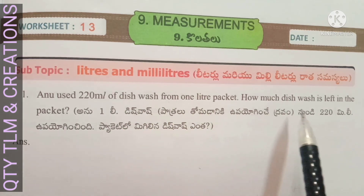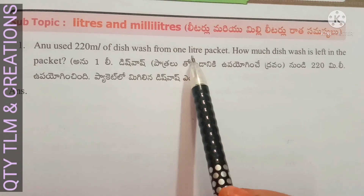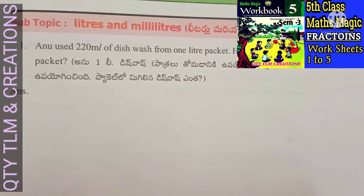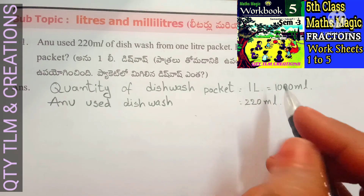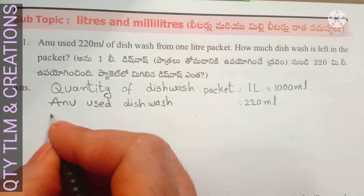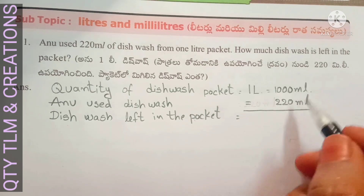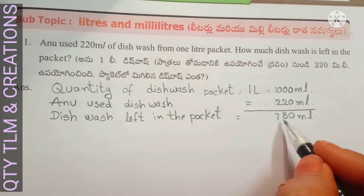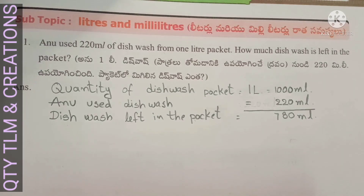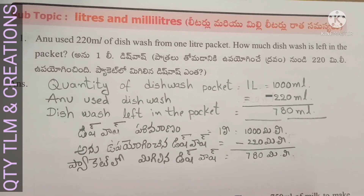First question: Anu used 220 milliliters of dishwash from a one-liter packet. How much dishwash is left in the packet? Quantity of dishwash packet is one liter, that means 1000 milliliters. Anu used 220 milliliters. Dishwash left in the packet equals 1000 minus 220, which gives us 780 milliliters.